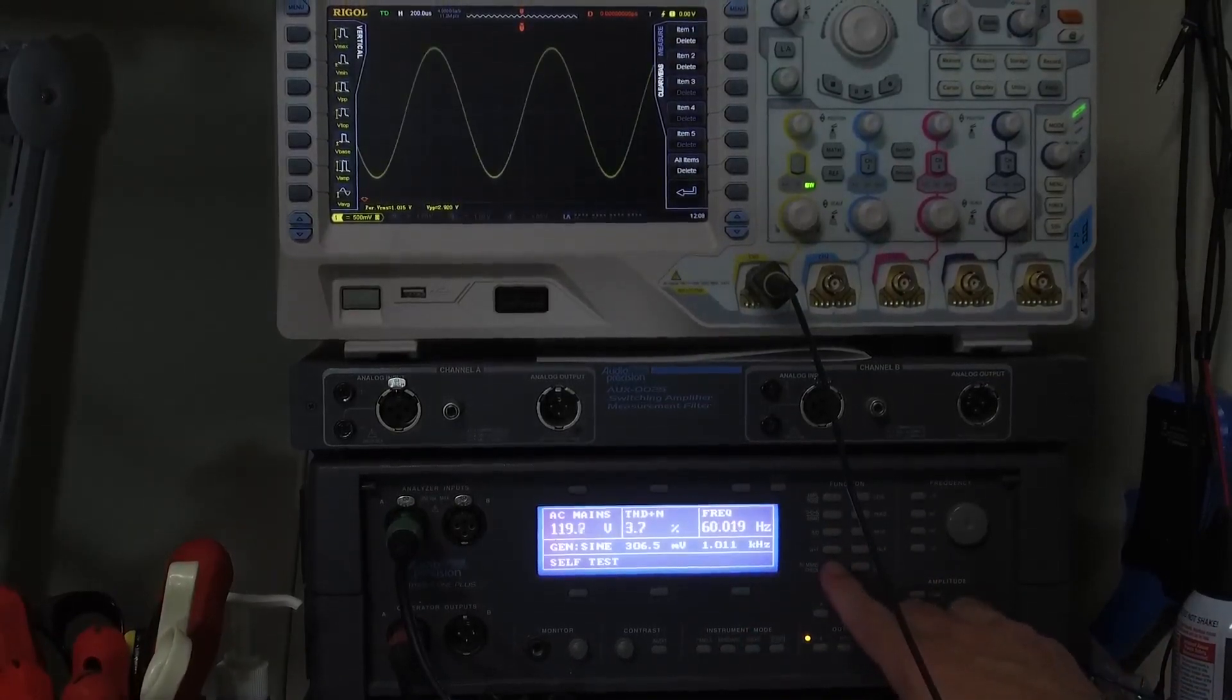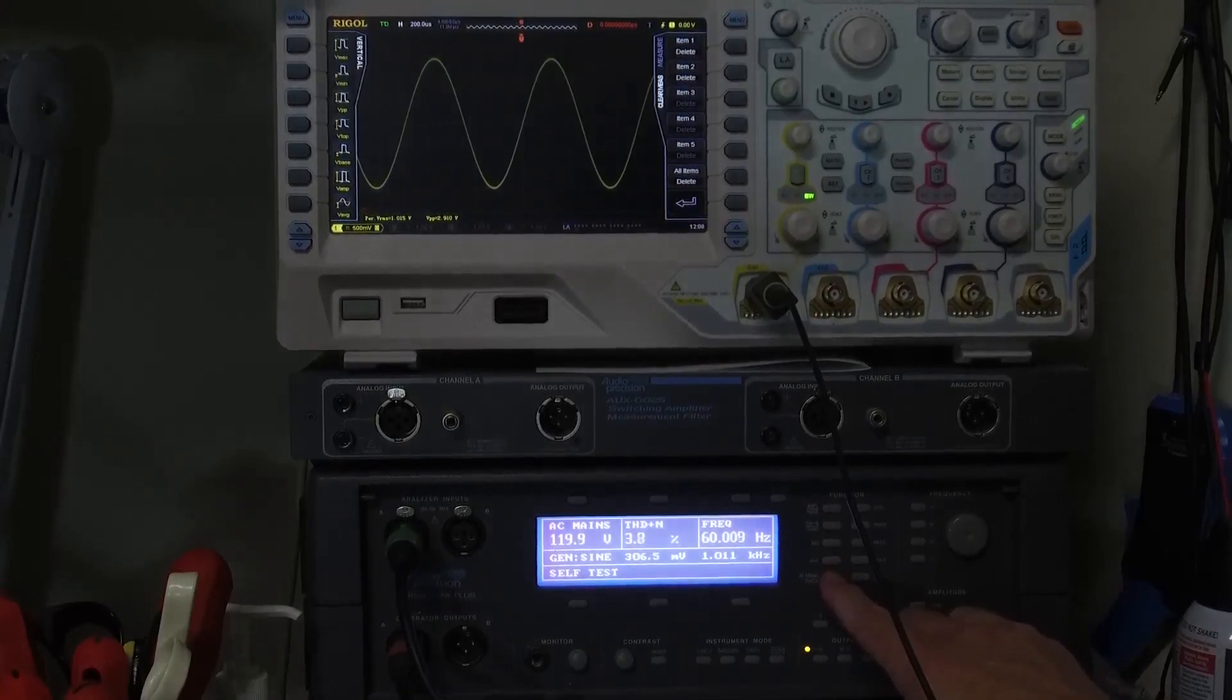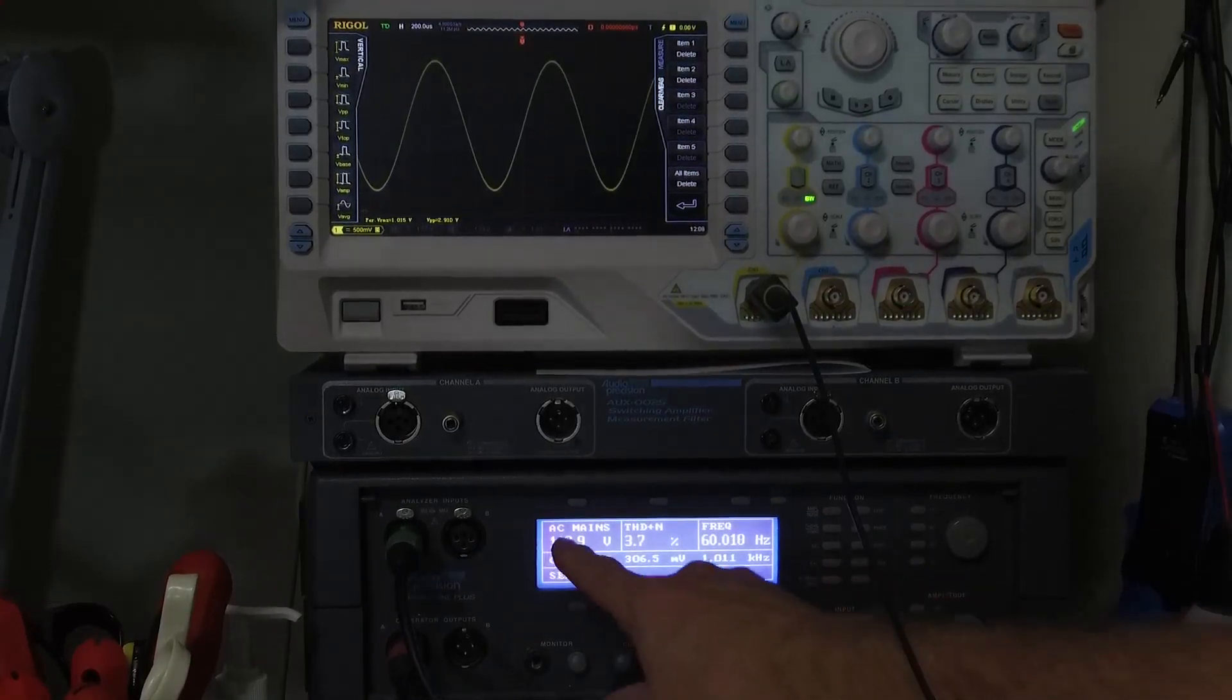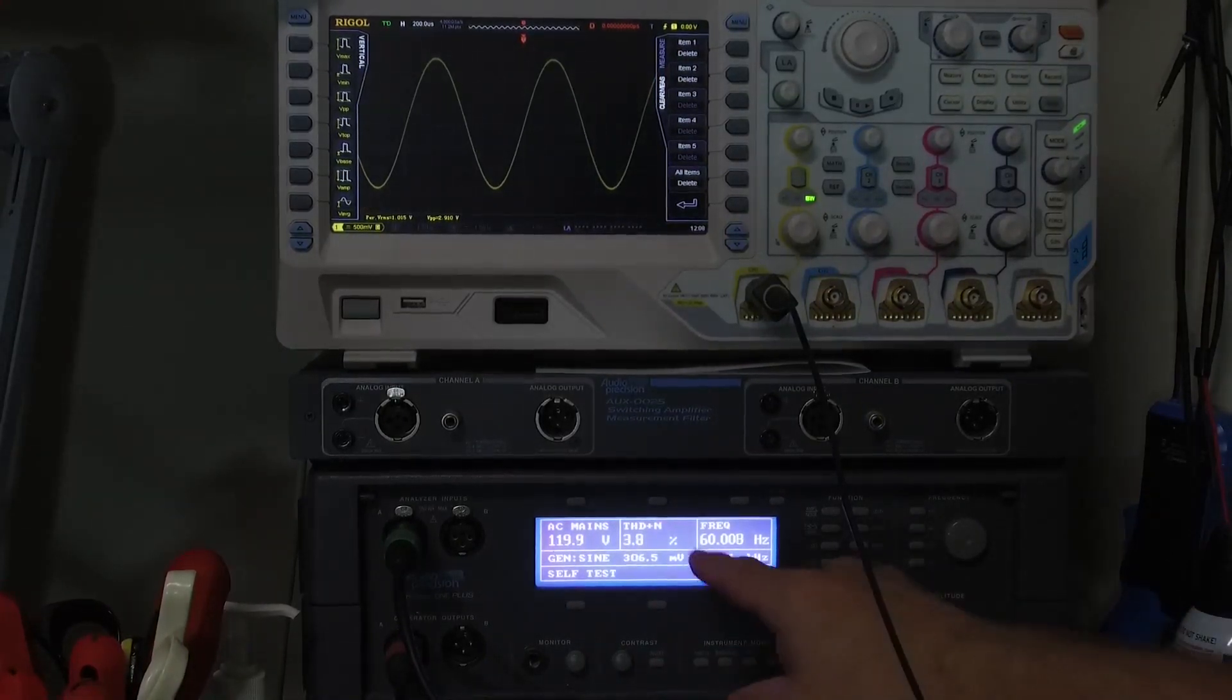This is kind of fun for giggles. This is the AC power at my house right now. Roughly 120 volts and we're running 3.7% distortion, we're basically at 60 hertz.